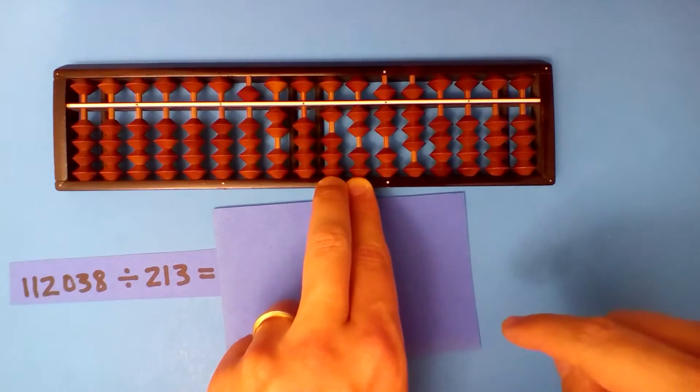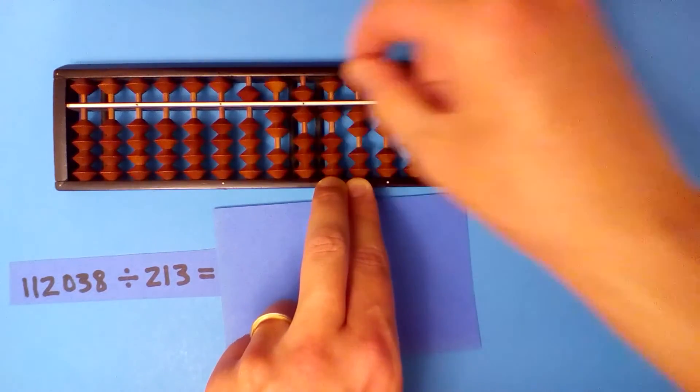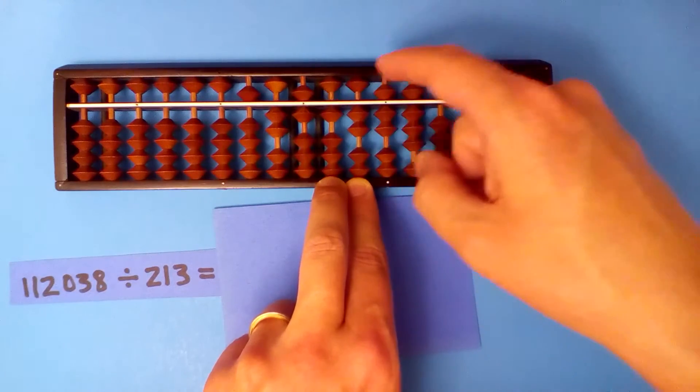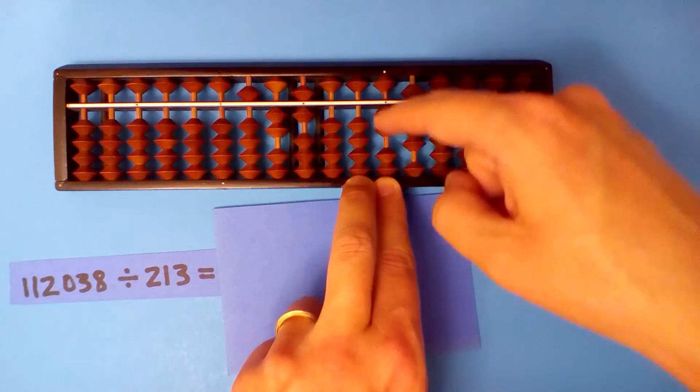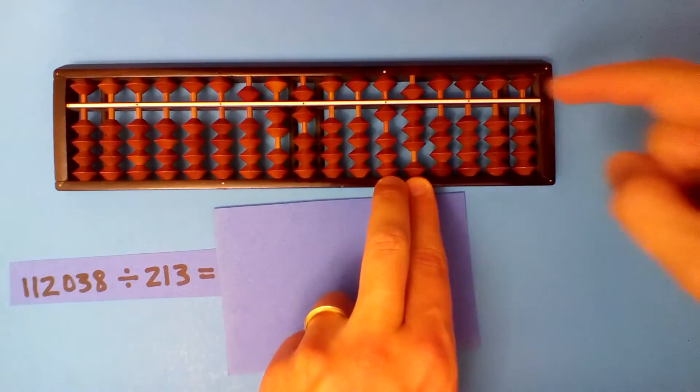Two times three six. Two into twelve six times. Six times two twelve, six times one six, six times three eighteen.